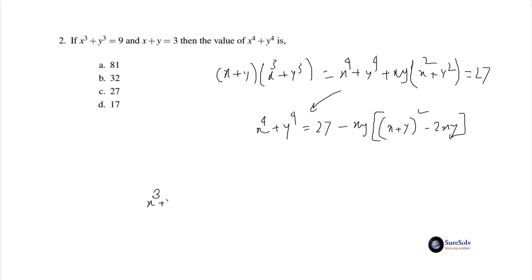x³ + y³ = (x + y)(x² - xy + y²). Now this is equal to 9 because the value of x³ + y³ is equal to 9.